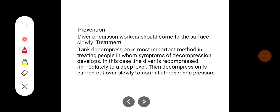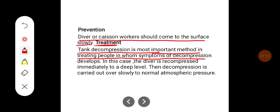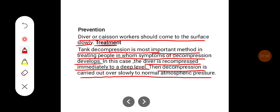How to prevent dysbarism: divers or caisson workers should come to the surface slowly. The treatment involved is tank decompression. It is the most important method in treating people who develop symptoms of decompression sickness. In this case, the diver is decompressed immediately to a deep level, then decompression is carried out slowly back to normal atmospheric pressure.